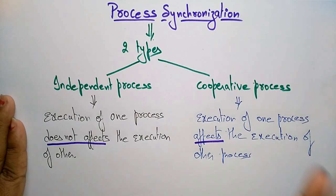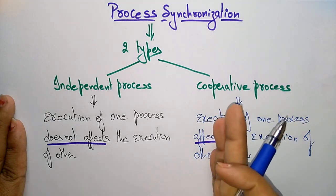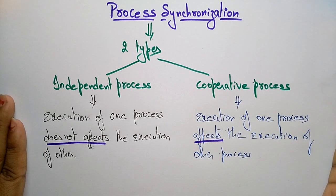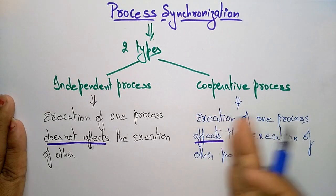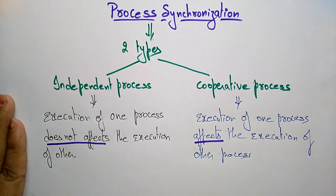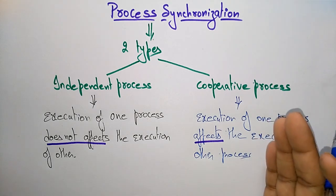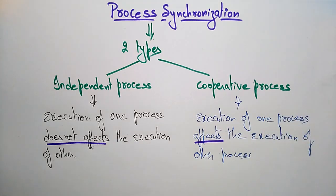After one movie, we watch another, then another — there should be cooperation. The execution of one process obviously affects the execution of others, because one person may be interested in one movie and another person in a different movie. If you are watching movies at home alone, there is no problem since you have your own resources and your own TV. So process synchronization arises only in cooperative processes.